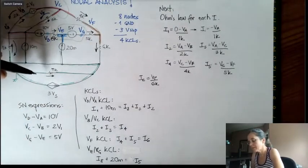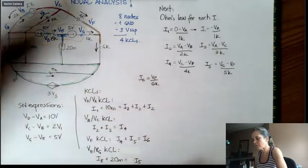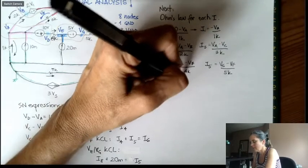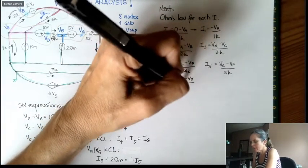I5 is VG minus VF divided by 5k. Then I6 is VF over 6k. I7, I can't find. I7 we don't have in these equations here, so I'm not going to do it. And then I8 is VD minus VE divided by 8k.